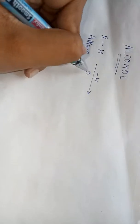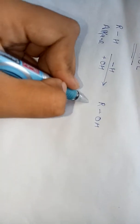Hello friends, today's topic is alcohol. Alcohol is the compound obtained by replacing one hydrogen atom from aliphatic hydrocarbons by a hydroxyl group — these are called alcohols. For example, from an alkane, when we remove the hydrogen and add OH, we get R-OH, which is our alcohol.